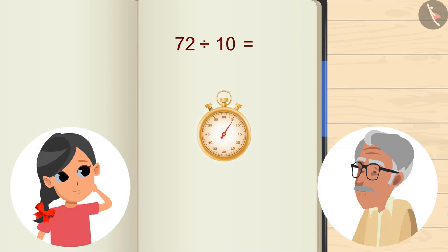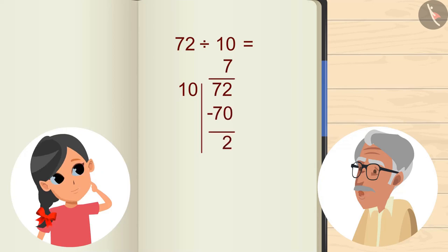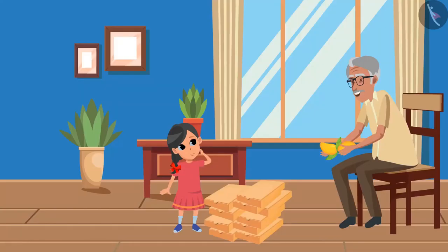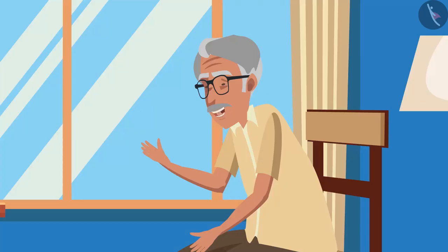The result is seven. Hmm, some mangoes are still left. Yes, grandpa, two mangoes are still left. Well, this is so good — seven mangoes will comfortably fit into 10 boxes, and these two remaining mangoes are for you. Thank you, grandpa!